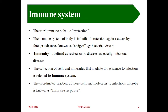The immune system of the body is built for protection against attack by foreign substances. Whenever foreign substances attack our body, that particular substance is called an antigen - it may be viruses, bacteria, fungi, or any microorganism. Whatever is released in response to protect against that is called an antibody. So the immune system works on two principles: antigen attack and antibody production. Immunity is defined as resistance to disease, especially infectious diseases.